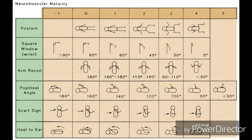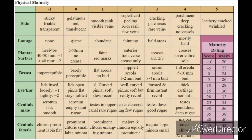The scoring system for the 6 aspects of neuromuscular maturity is shown in this slide. In our patient: posture in semiflex position — score 2; square window angle around 45 degrees — score 2; arm recoil angle less than 90 degrees — score 4; popliteal angle around 120 degrees — score 2; scarf sign with elbow touching midline — score 2; and heel to ear test — score 2. Total neuromuscular maturity score is 14.